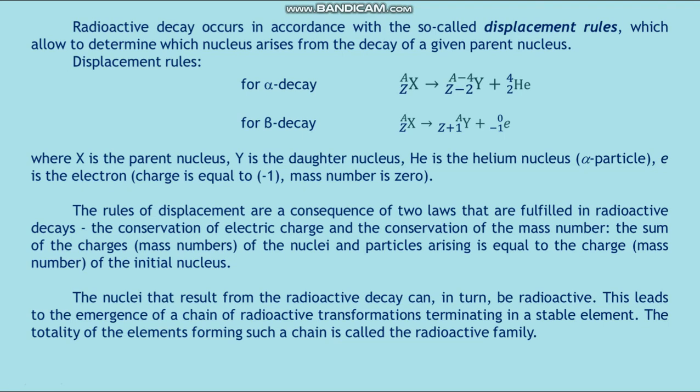The nuclei that result from the radioactive decay can in turn be radioactive. This leads to the emergence of a chain of radioactive transformations terminating in a stable element. The totality of the elements forming such a chain is called a radioactive family.